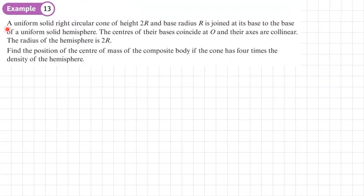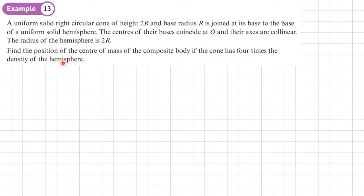Example 13. A uniform solid right circular cone of height 2R and base radius R is joined at its base to the base of a uniform solid hemisphere. The centres of their bases coincide at O, the origin, and their axes are collinear. The radius of the hemisphere is 2R. Find the position of the centre of mass of the composite body if the cone has four times the density of the hemisphere.